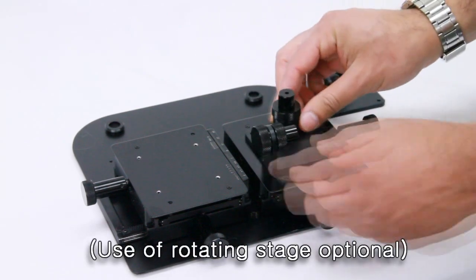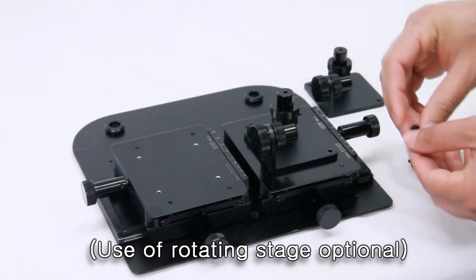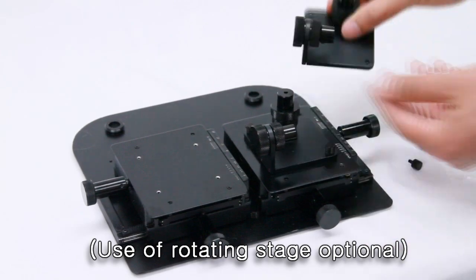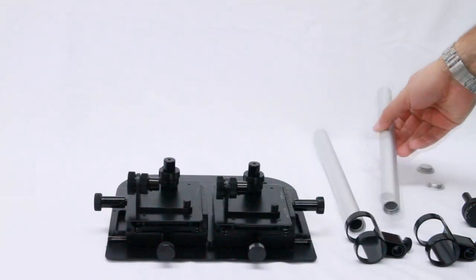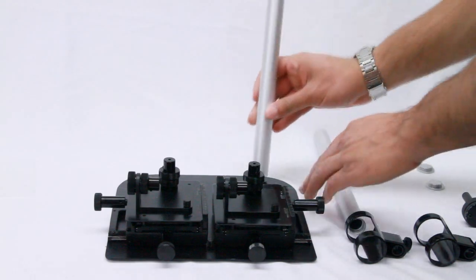Attach the subject rotation stage onto the XY base with the included bolt. Then connect each vertical pole to the visible threading on the base.